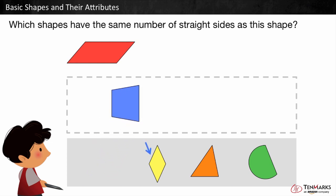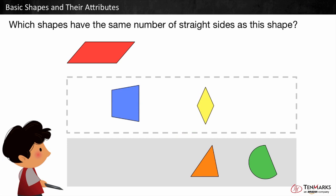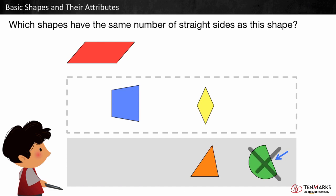This shape has one, two, three, four straight sides. It also has the same number of straight sides as the red shape. This shape has one, two, three straight sides. It does not have the same number of straight sides as the red shape. This shape has one straight side. It also does not have the same number of straight sides as the red shape.